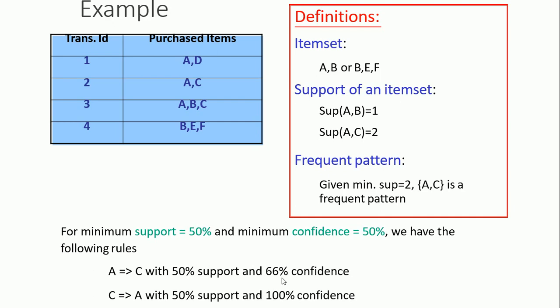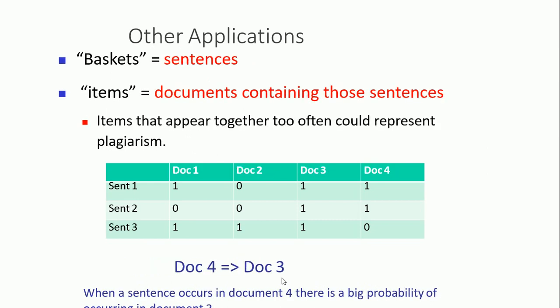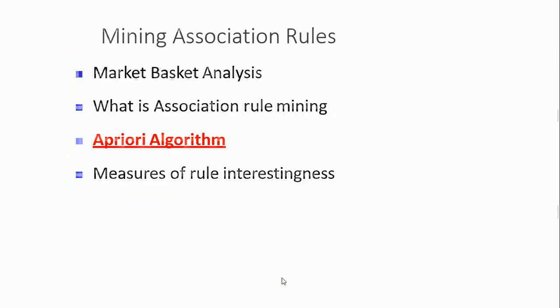The minimum support is 50% and the minimum confidence criteria need to be satisfied — we'll discuss this in more detail when we apply a real-time application to analyze market basket data. These concepts also apply to documents, web pages, and link pages as other applications of association mining. We will discuss and apply the Apriori algorithm in the next tutorial.